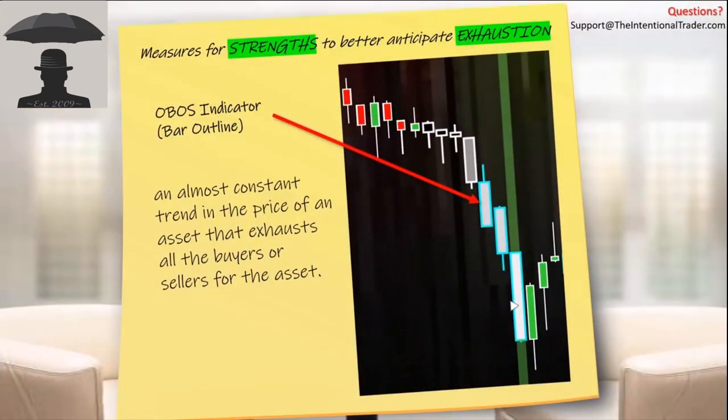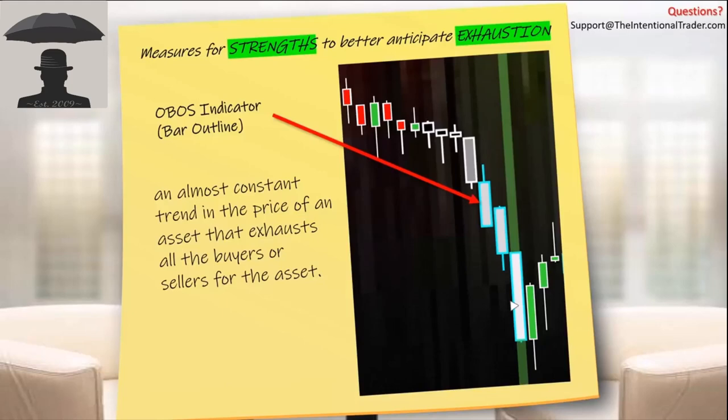The indicators I talked about and showed you indicating a strong push in the previous video — this is our OBOS indicator, or our overbought/oversold indicator. We use that on the actual bar itself and we paint the outline of the bar to show us when we have an overbought or oversold condition. You can tune the color and whether you want an outline or another indicator to show whether you got an overbought or oversold condition. It's an almost constant trend where the price of an asset exhausts all the buyers or sellers for that asset.